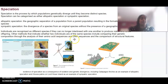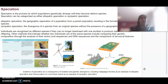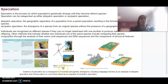Individuals are considered different species if they can't breed with each other to produce viable and fertile offspring. We can also compare their DNA to see if there are any similarities or differences, and compare their structural features as well. The main example for allopatric speciation is the Galapagos finches on the Galapagos Islands, looking at their beak structure. For sympatric speciation, the divergence of the Halio palm species on Lord Howe Island is the key example.